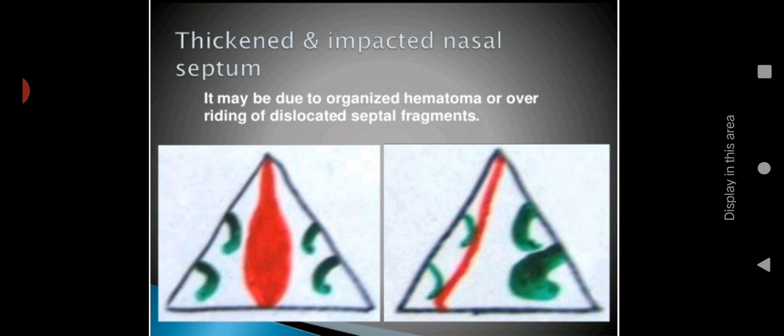A thickened and impacted nasal septum: the nasal septum is getting thickened, impacted, or obstructed. It may be due to organized hematoma or overriding of dislocated septal fragments. This mainly occurs after a fracture or trauma — organized hematoma or blood clot forms inside the cartilage, which can dislocate the septal fragments.